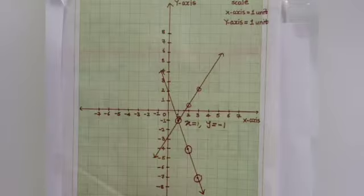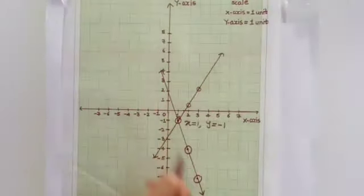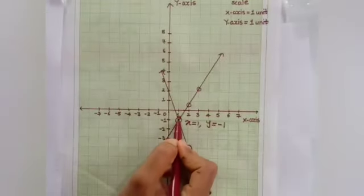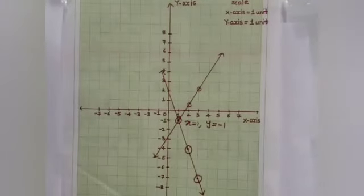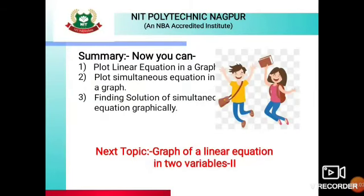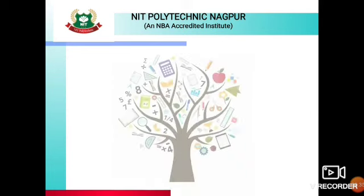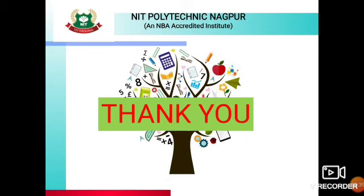जब भी आपके पास 2 equations रहेंगे, तो graph के through solution find करना हो तो आपको हमेशा उनका intersecting point मिलेगा, और वहाँ आपका solution कहलाएगा। Summary: इस video में हमने सीखा — plot linear equation in a graph, plot simultaneous equations in a graph, और finding solution of simultaneous equations graphically। Our upcoming topic is graph of a linear equation in two variables for parallel lines. Thank you for watching. Keep learning, happy learning!